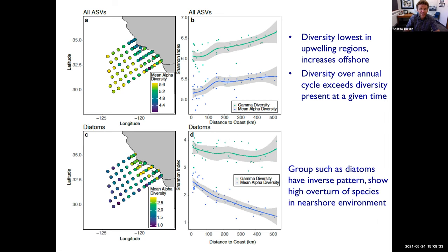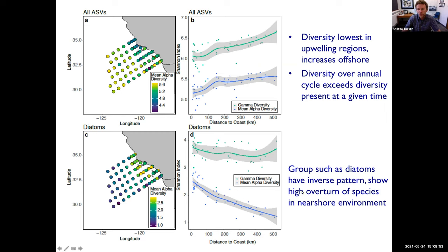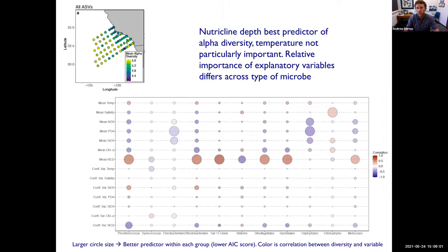Not all organisms behave this way. For example, diatoms show an inverse pattern. This figure on the bottom shows the mean alpha diversity for diatoms — it's highest near the coast. You can see the opposite pattern from the rest of total microbial diversity. So diatoms behave differently than other groups, and there are other groups that do as well — I just want to stress that here.